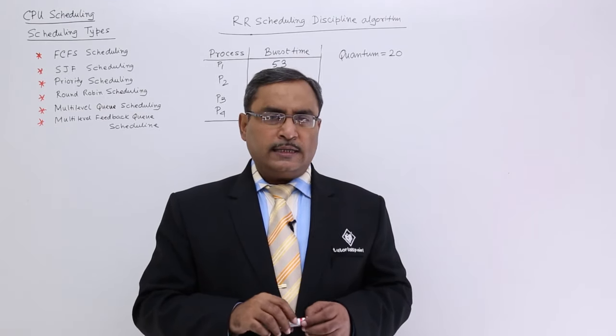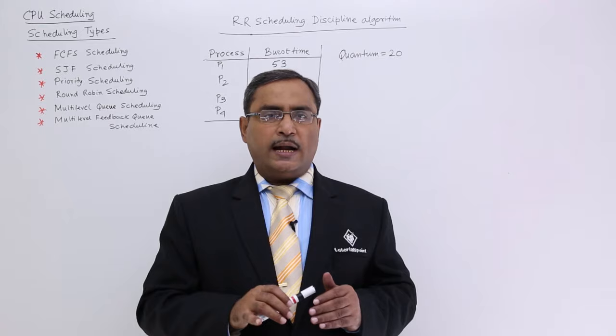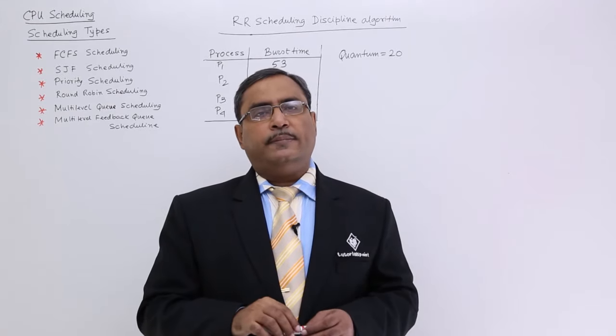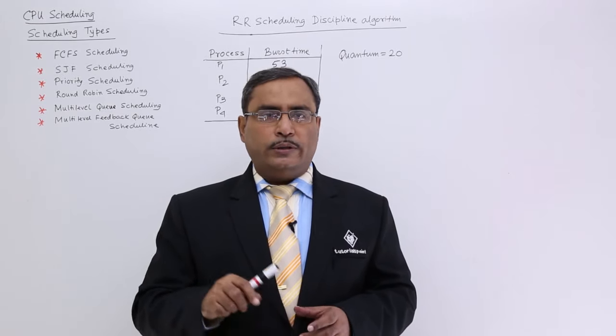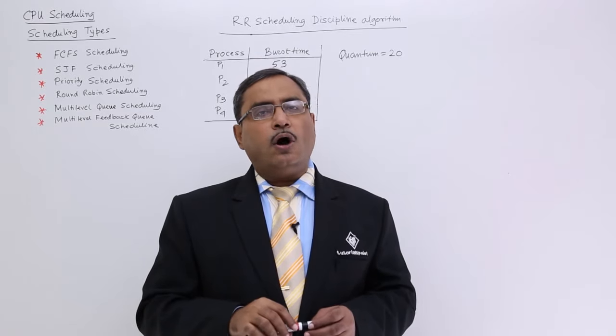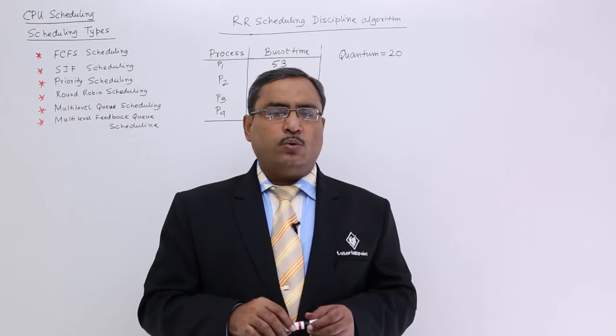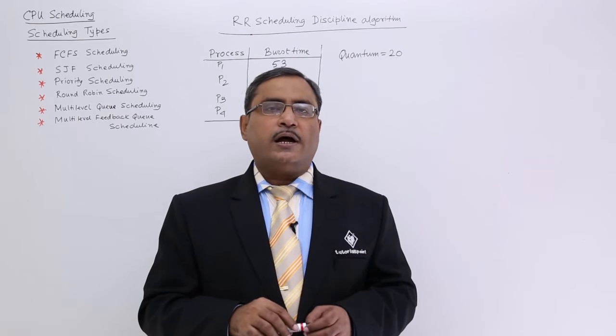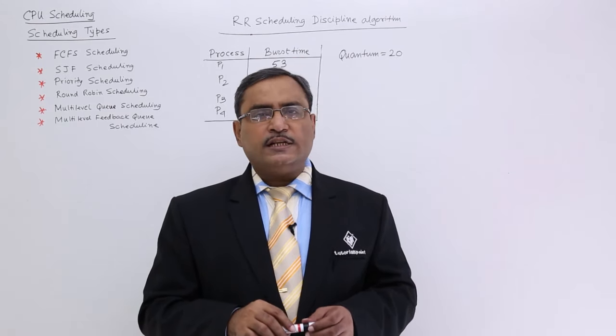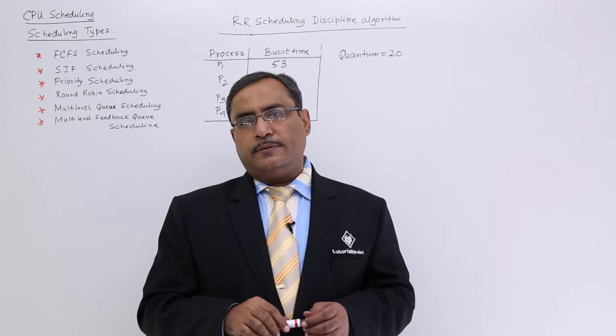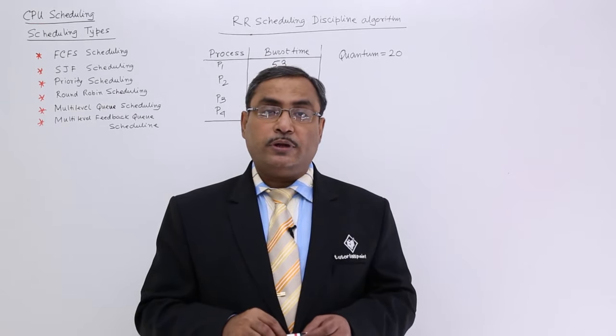Point number two is that, let us suppose the higher priority processes are having a long burst time. As a result of that, when the lower priority processes will come, they will be suffering a long waiting time also. So as a result of that, the average waiting time, the average turnaround time, the average response time will get degraded. That was the main disadvantage of priority scheduling.